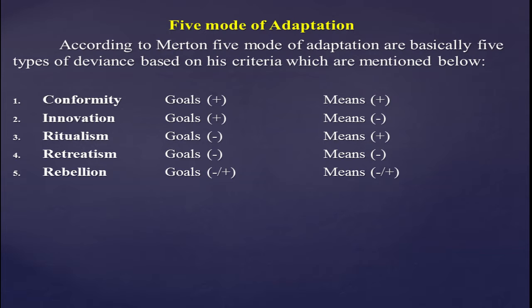The five modes of adaptation are: conformity, innovation, ritualism, retreatism, and rebellion. This is also why this theory is called the goal and mean theory.